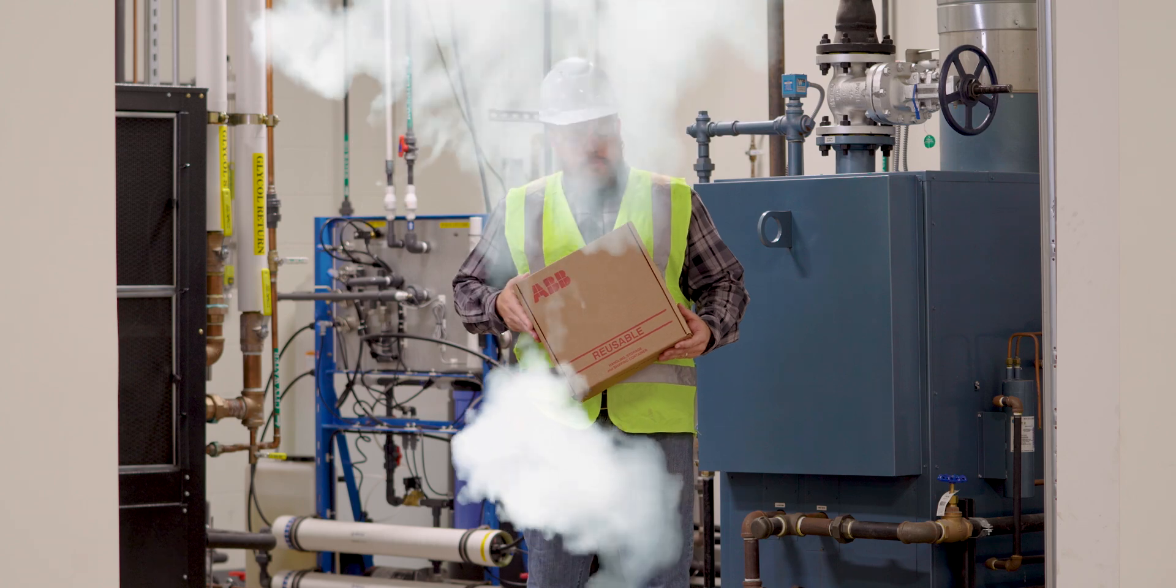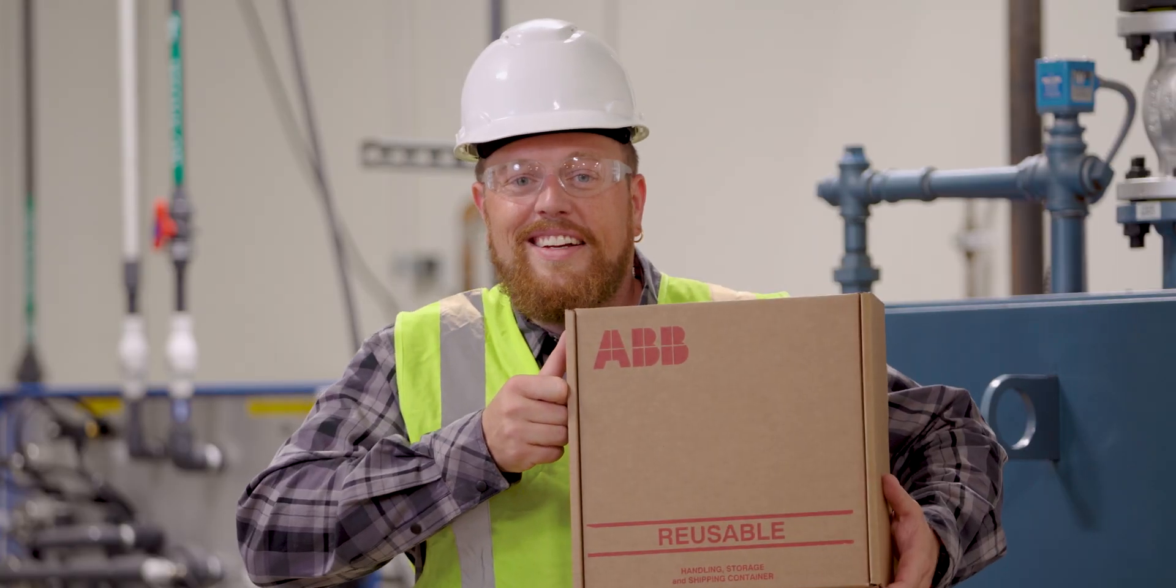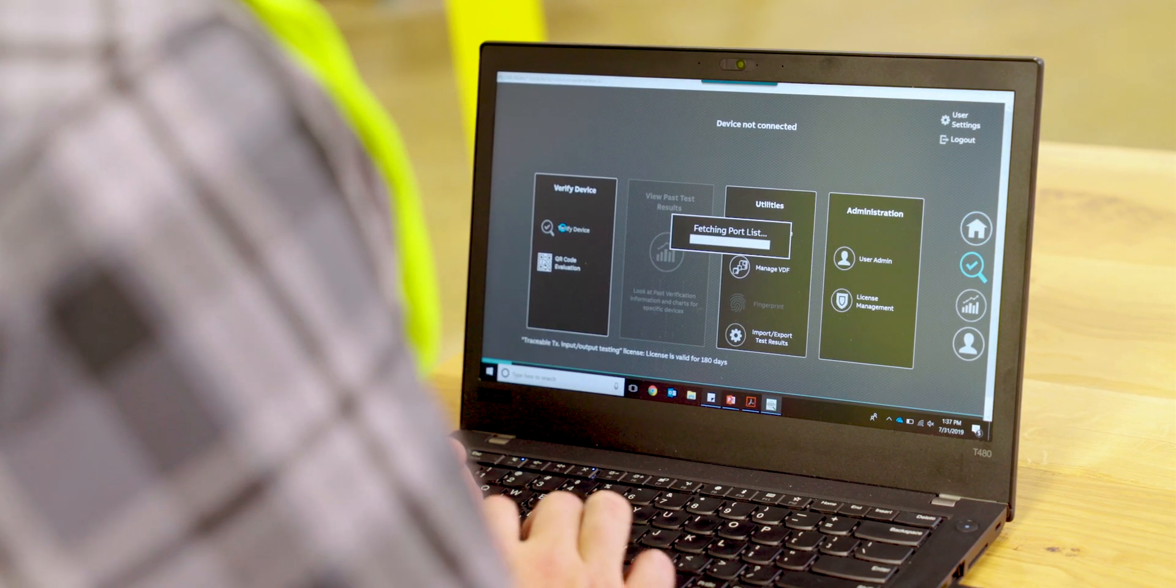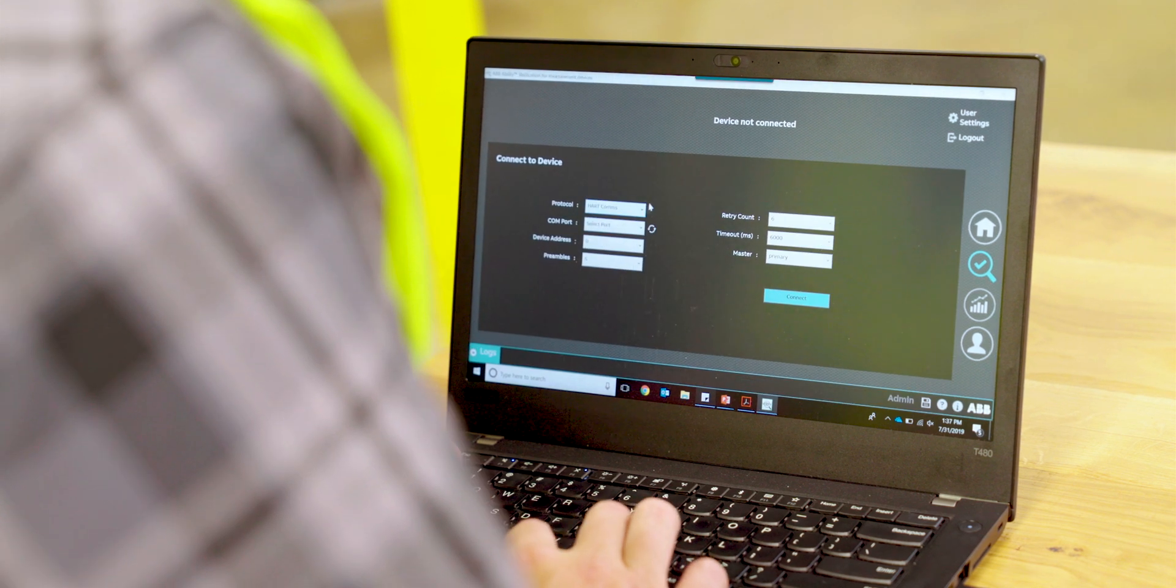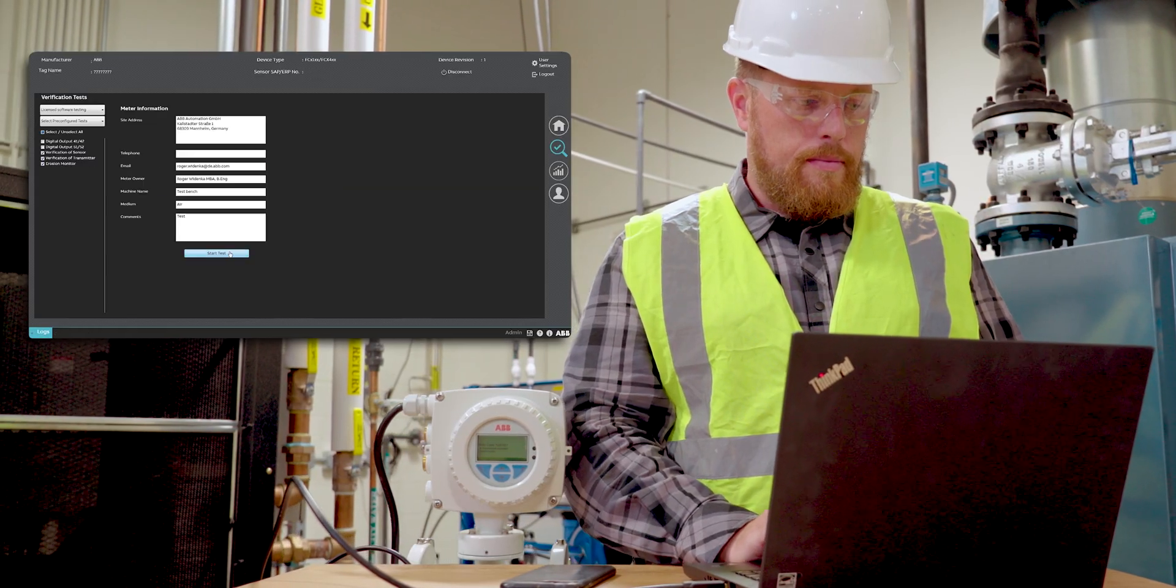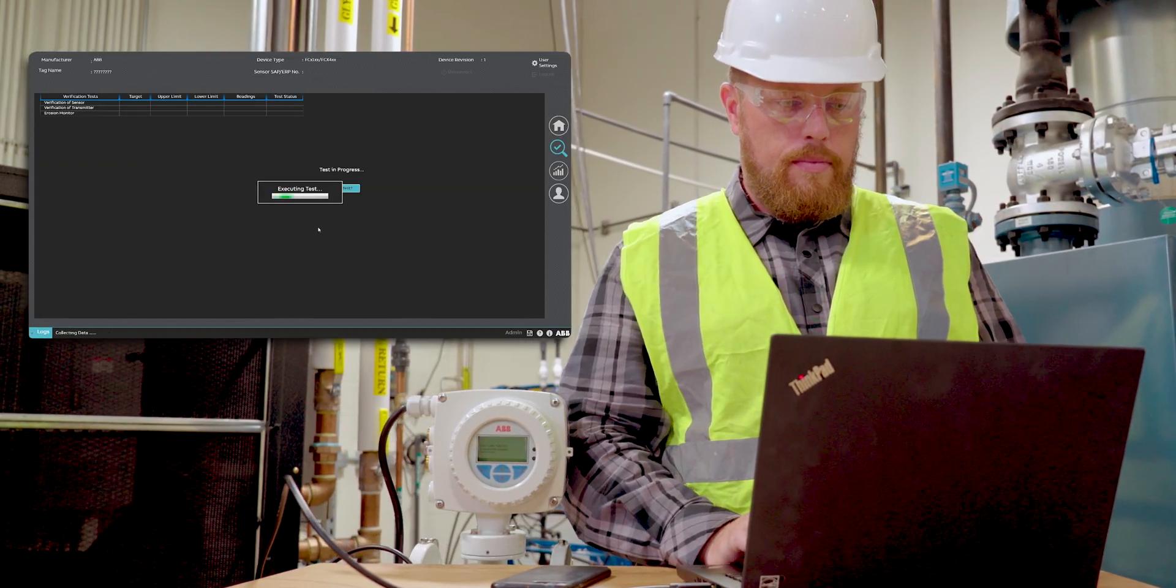Thankfully, ABB has a solution to simplify verification. ABB Ability Verification for Measurement Devices is an on-site condition monitoring tool designed to verify your whole portfolio of field devices.